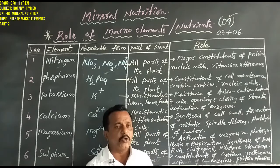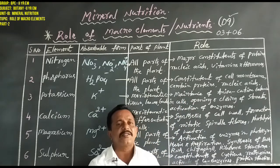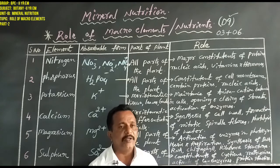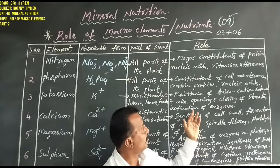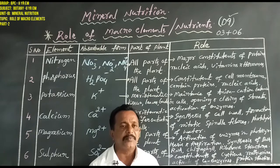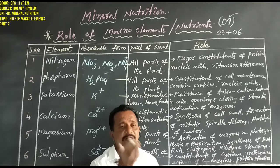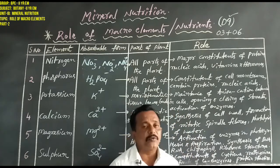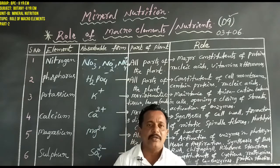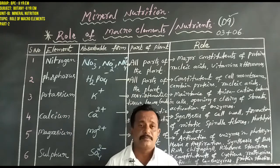Potassium plays a major role in maintaining anion-cation balance in cells, keeping them in equilibrium. It also regulates the opening and closing of stomata — some plants open stomata during the day and others during the night — depending on the concentration and influx-reflux of potassium. Several enzymes are activated by potassium.